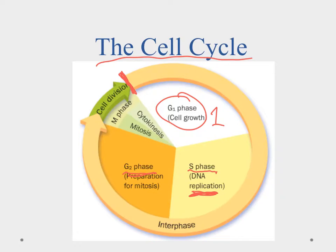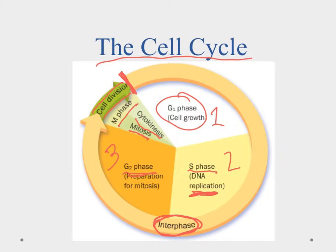The G1, S, and G2 phases together make up interphase, where the cell spends most of its time. Then it enters the M phase — cell division — which is mitosis followed by cytokinesis, when we actually cleave and split the cell into two. At the end of the M phase, two daughter cells are formed, and each starts the cycle again in G1.